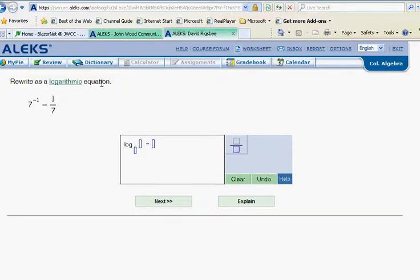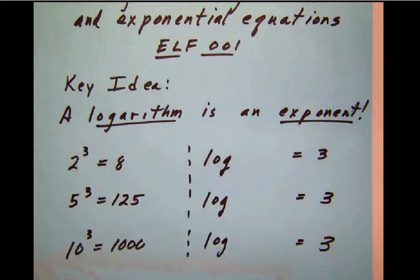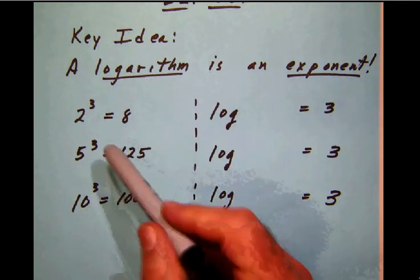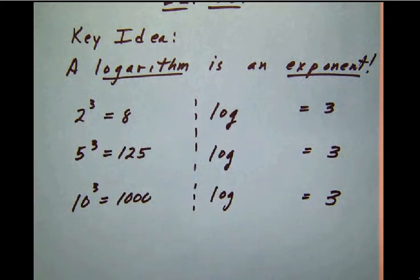So before we do that, let's spend a few minutes talking about what a logarithm is. First of all, a logarithm is just another name for an exponent. So let's look at some examples here. We know that 2 to the third power is 8. And we say that this number 2 is the base, and this number up here is the exponent.